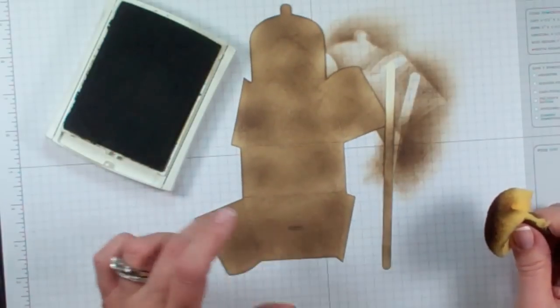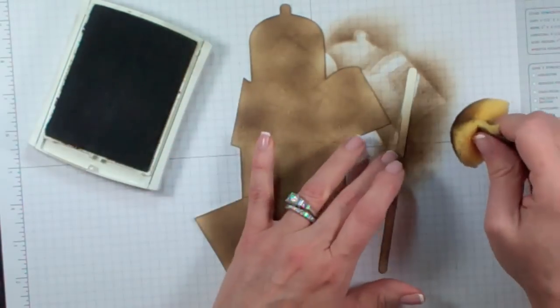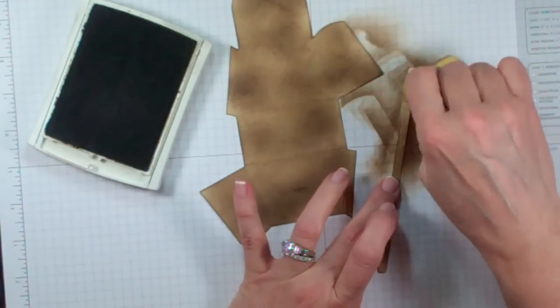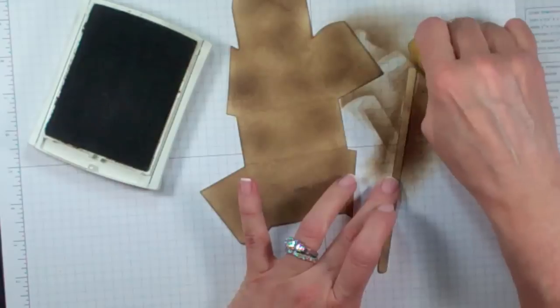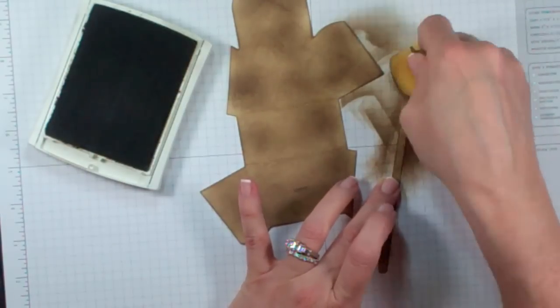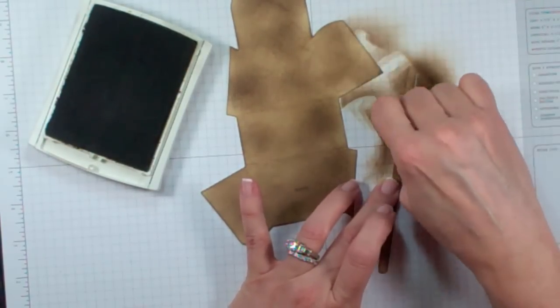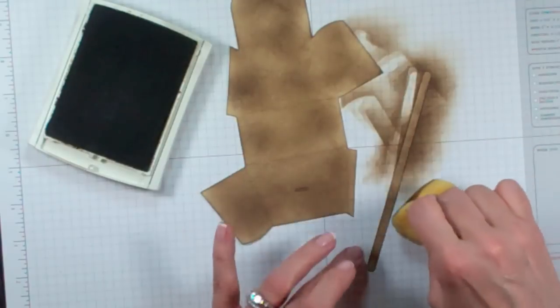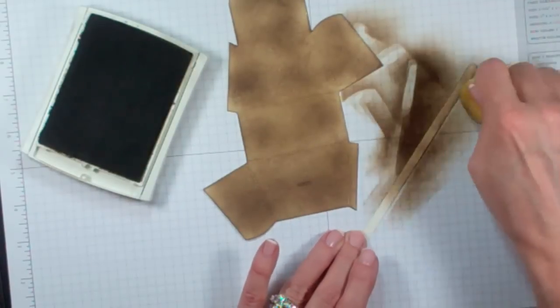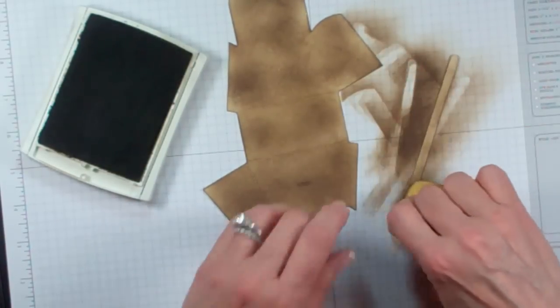Once you have uniform coverage on your purse piece, you're going to do the same thing to the handle. But be careful with this handle because it's a little harder to transfer it without tearing the paper. I'd like you to turn it over and do the back side as well because you'll see a portion of that when you look at the purse.